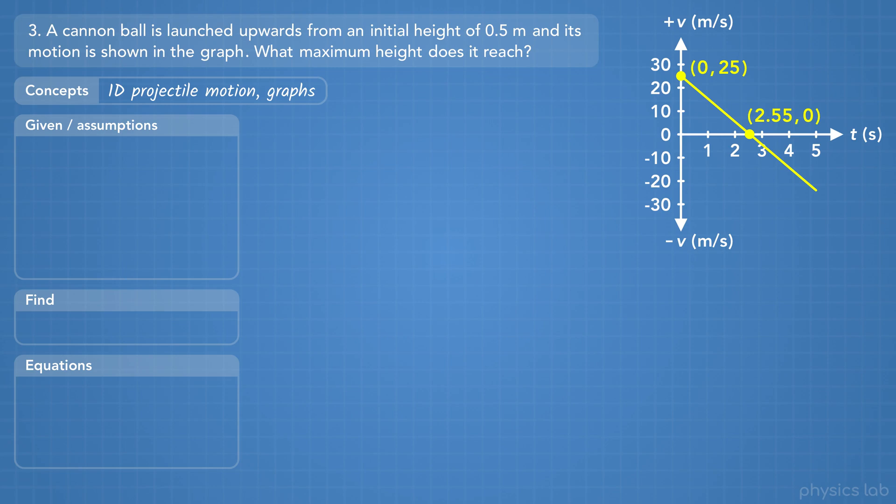A cannonball is launched upwards from an initial height of 0.5 meters, and its motion is shown in the graph. What maximum height does it reach?